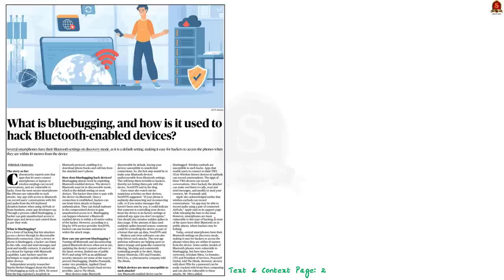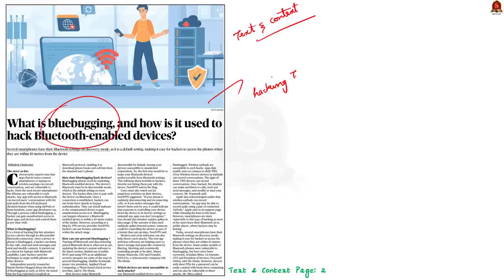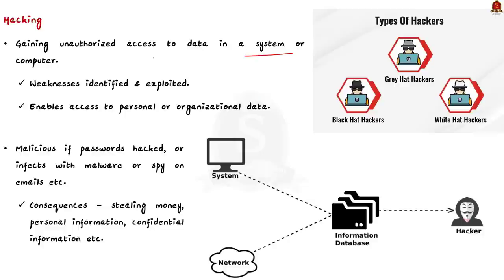This is a text and context article talking about a new term called blue bugging, which is related to a hacking technology. First, you have to know what is hacking. Generally, hacking means gaining unauthorized access to data in a system or computer. The weakness in a computer system or network are identified and then exploited, and this is usually done to gain unauthorized access to personal or organizational data. The key term to remember is unauthorized access.